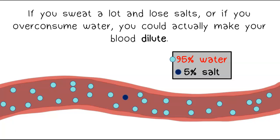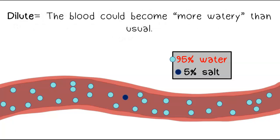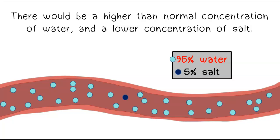If you sweat a lot and lose salts or if you over consume water, you could actually make your blood dilute. By dilute, we mean the blood could become more watery than usual. There would be a higher than normal concentration of water and a lower concentration of salt.